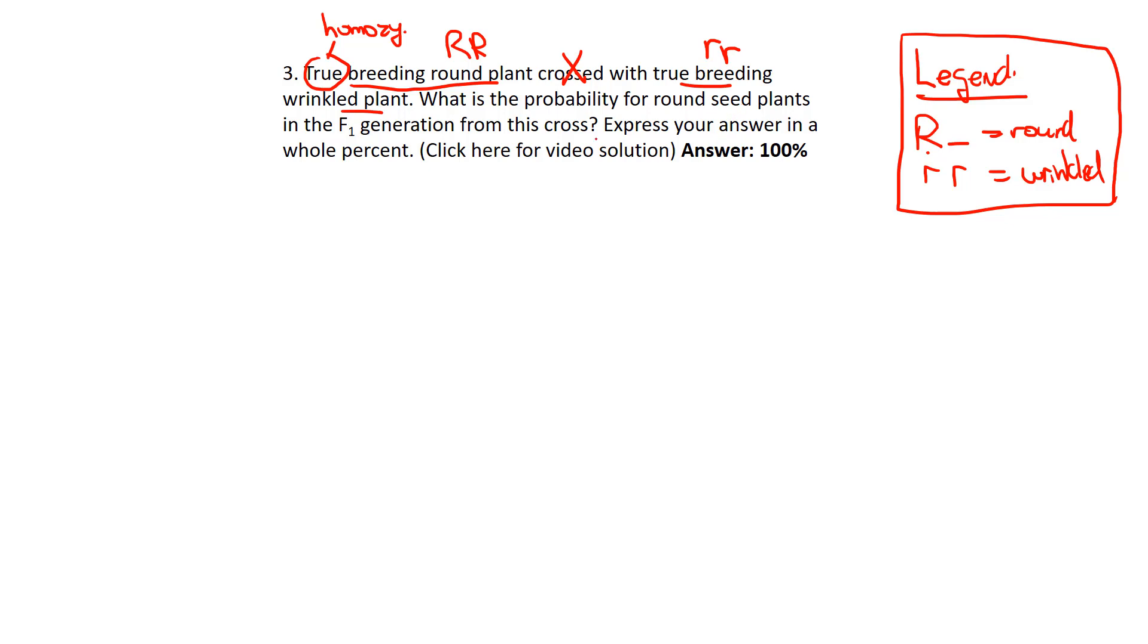So there's our genotypes. The question asks: what is the probability of a round seed plant in the F1 generation from this cross? Express your answer as a whole percentage.